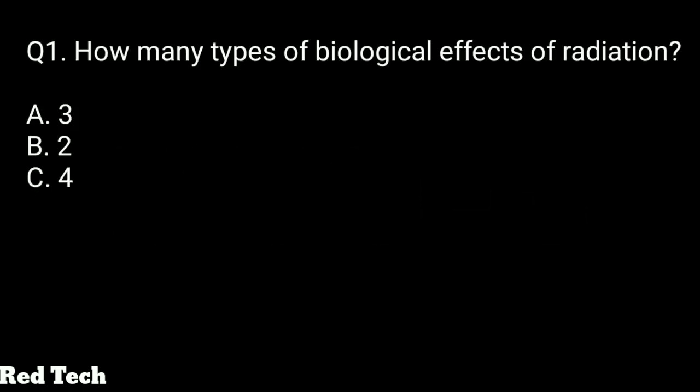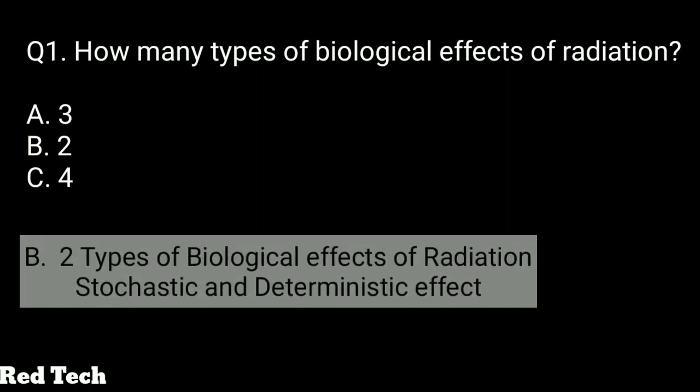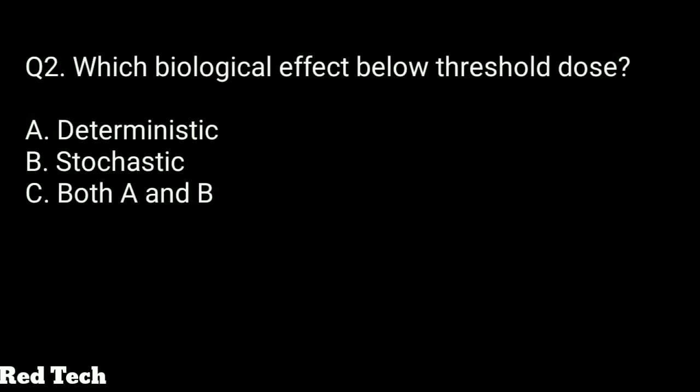Question number one: how many types of biological effects of radiation are there? Options: 3, 2, or 4. The right answer is 2 — there are two types of biological effects of radiation: stochastic and deterministic effect. Stochastic is also called probabilistic effect.